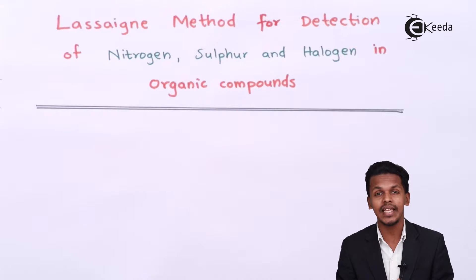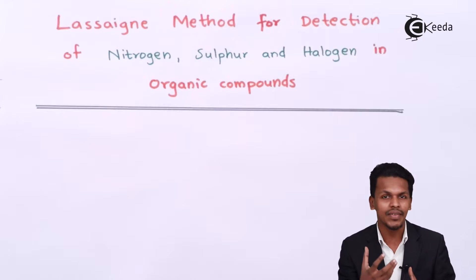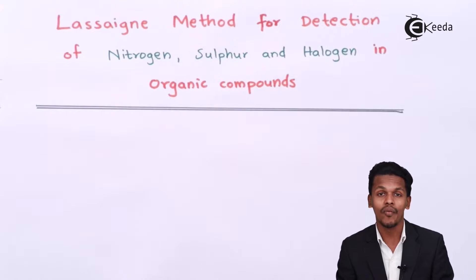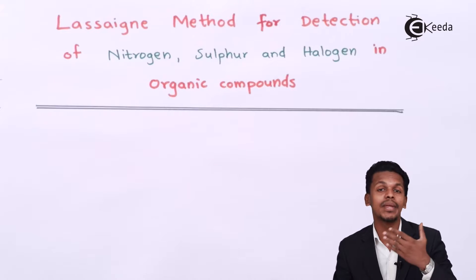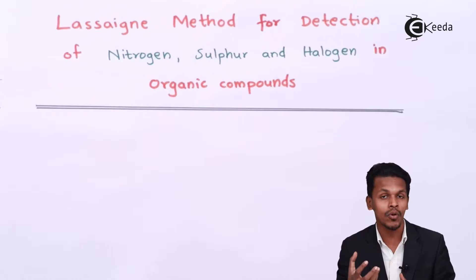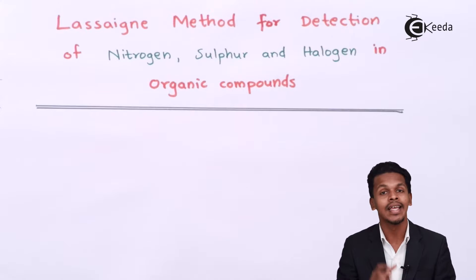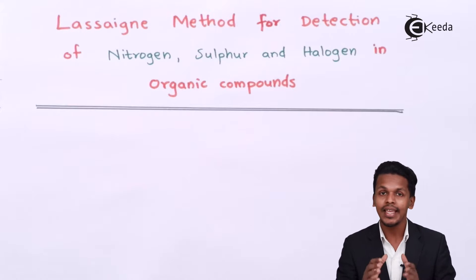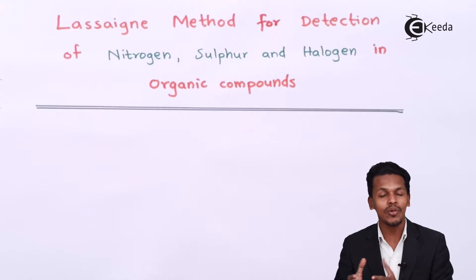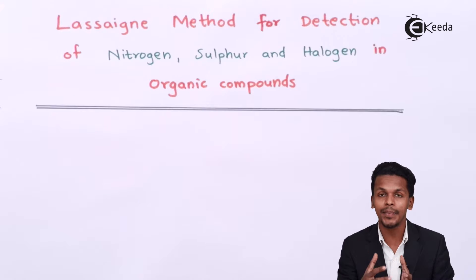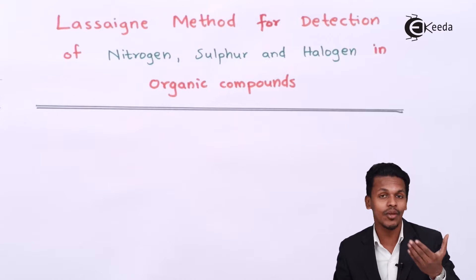After heating, the organic compound reacts with the sodium. During the tremendous amount of heat, the sodium reacts with the organic compound to form certain compounds, which are basically ionic compounds of sodium. Let me explain how the reaction occurs and what compounds are produced when sodium reacts with the organic compound.